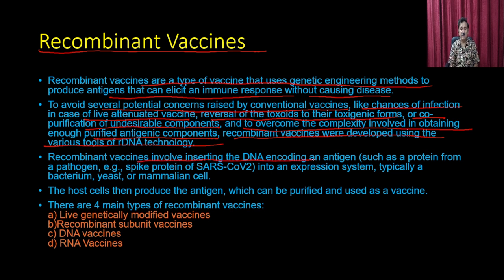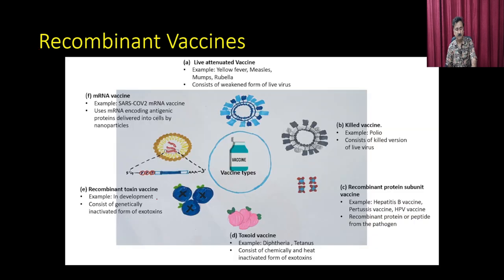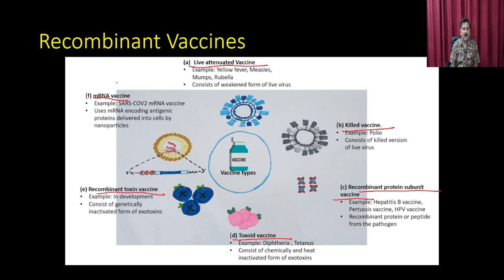Recombinant vaccines involve inserting DNA encoding an antigen into an expression system — typically bacteria, yeast, or mammalian cells. The host cells then produce the antigen, which can be purified and used as a vaccine. There are four types of recombinant vaccines: live genetically modified vaccines, recombinant subunit vaccines, DNA vaccines, and RNA vaccines.